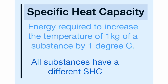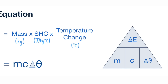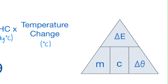Moving on to specific heat capacity. It is defined as the energy required to increase one kilogram of a substance by one degree Celsius. Specific heat capacity also comes with an equation — be careful here of the units, and also remember the triangle so that you can rearrange the equation well.